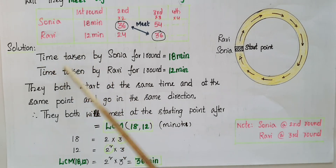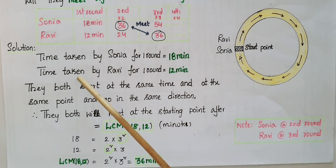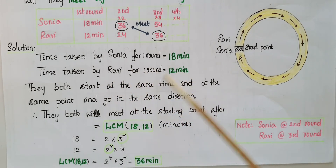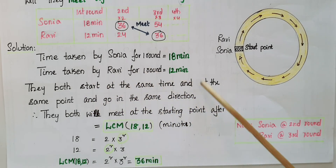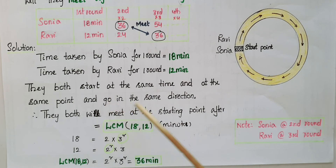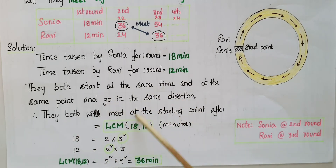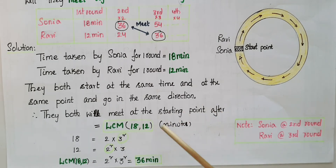The solution: time taken by Sonia for the first round is 18 minutes. Time taken by Ravi for the first round is 12 minutes. They both start at the same time and at the same point and go in the same direction. Therefore they will both meet at the starting point after LCM of 18 and 12 minutes. So find the LCM here.